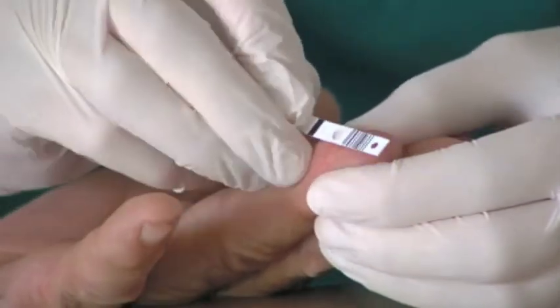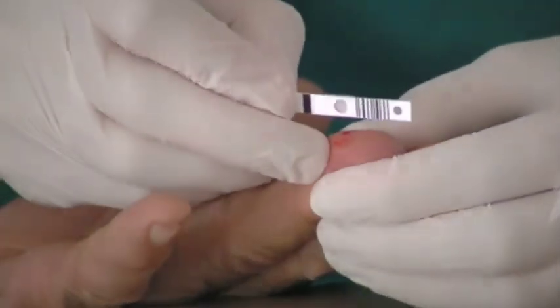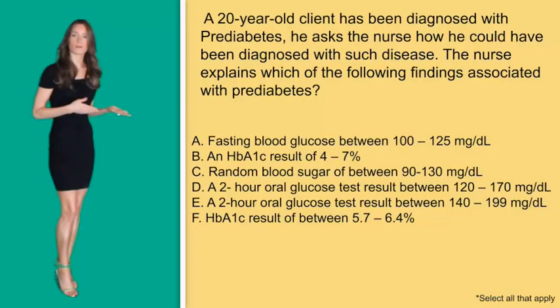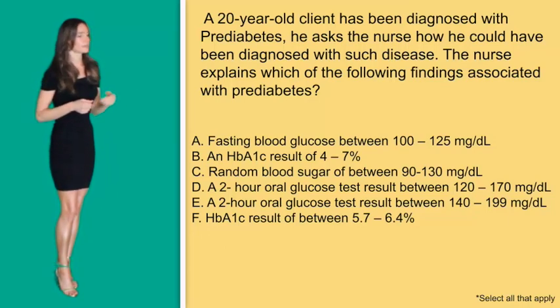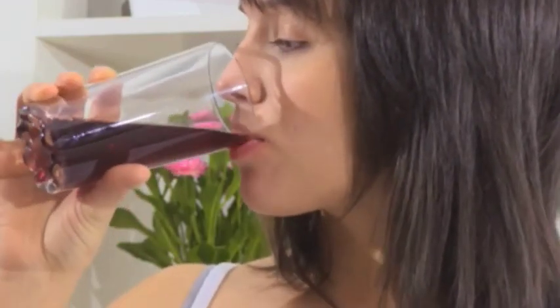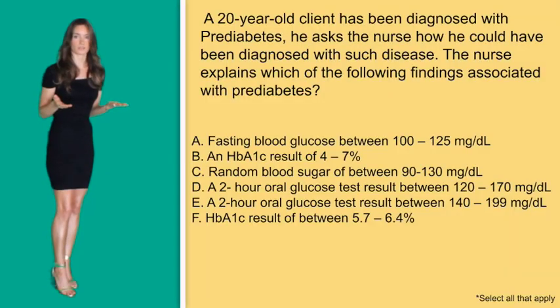A random blood sugar means a check without considering meals — the patient could have just eaten, and after eating, blood sugar is normally slightly higher. A level of 130 isn't too high, making this a normal value and not the correct answer. Option D: a two-hour oral glucose test result between 120 and 170. With the oral glucose test, the patient ingests a solution very high in glucose. The blood sugar would be slightly high at first, then the pancreas brings it down. A result around 120 is still considered normal in most facilities.